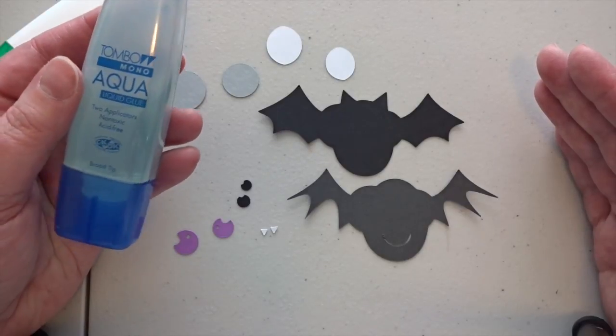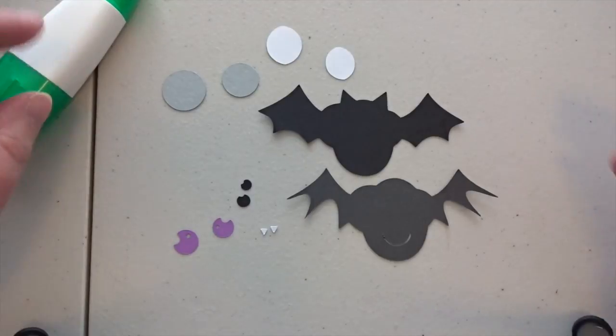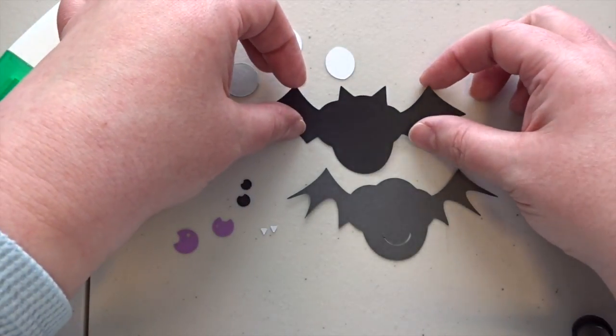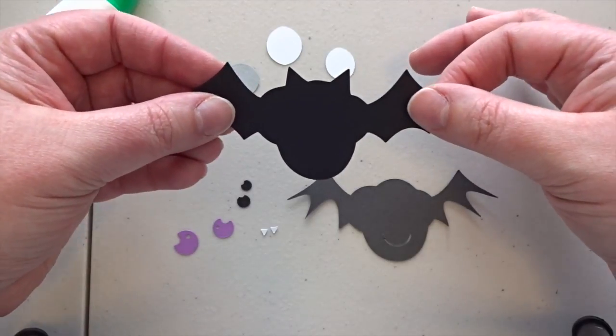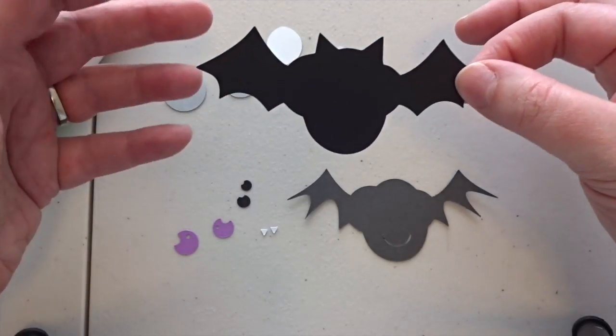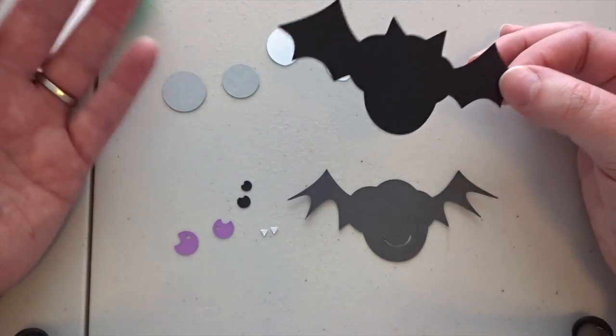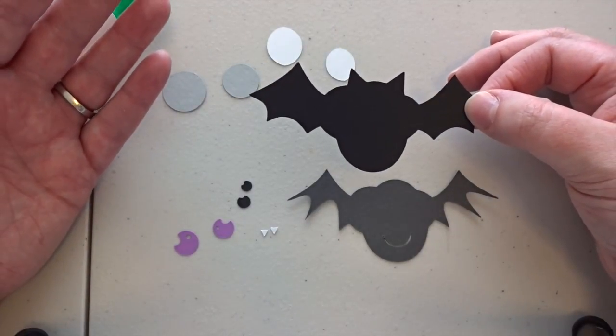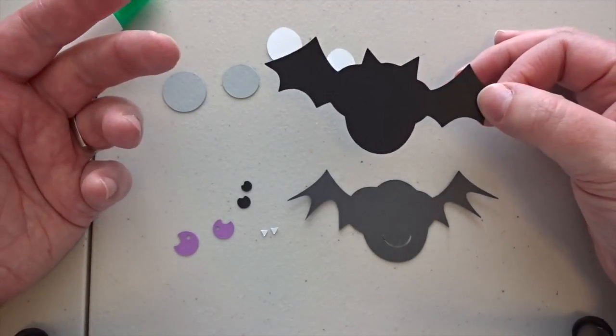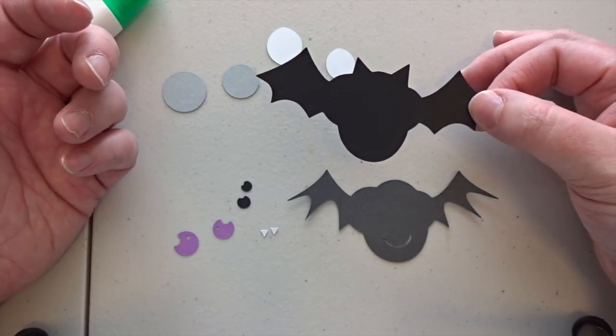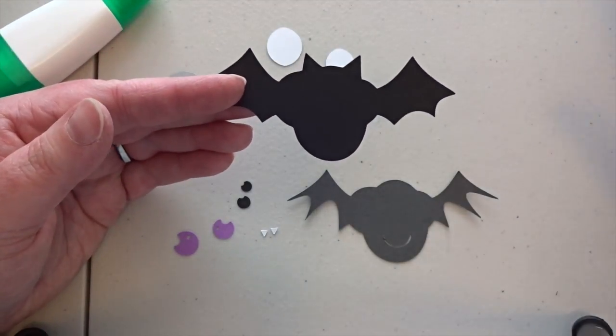I also enjoy their Tombow Mono Aqua Liquid Glue, which is a really nice glue, great for larger applications, a little sloppy with tiny pieces but still a favorite of mine. When you get your cut file, you'll also get a photograph of what the finished image should look like and an assembly instruction sheet.